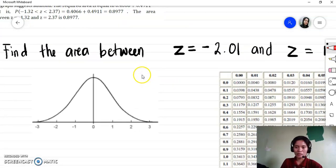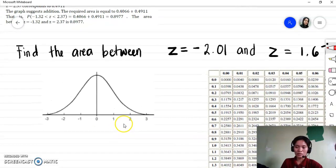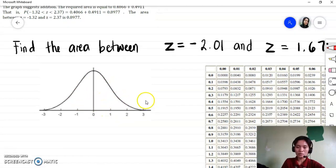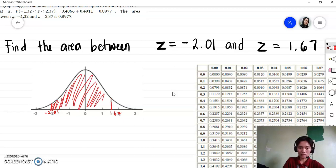Find the area between negative 2.01 and 1.67. Again, first step is to draw your curve. Then you locate these Z values. You have here negative 2.01, so it's near negative 2. And shade the area between.